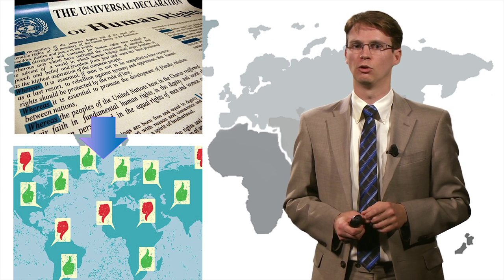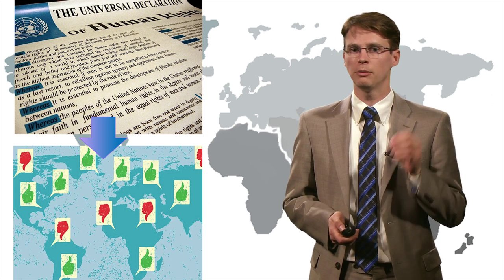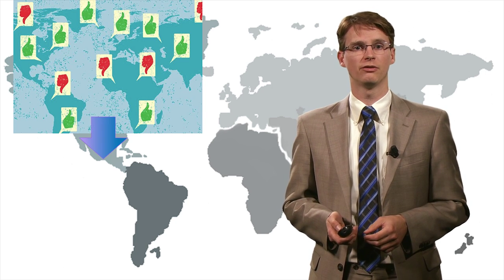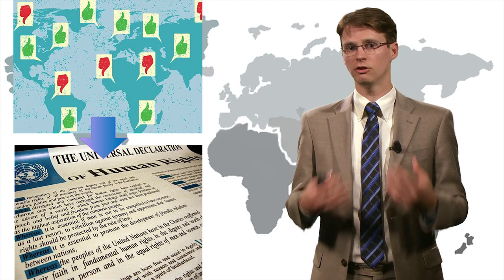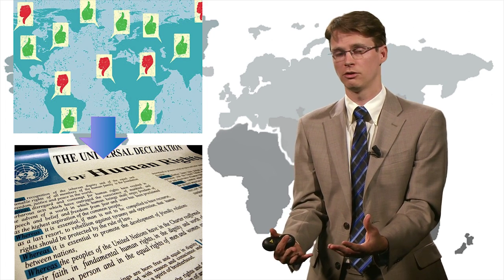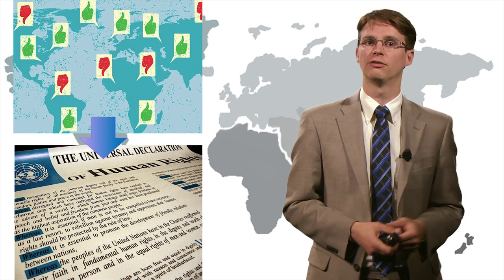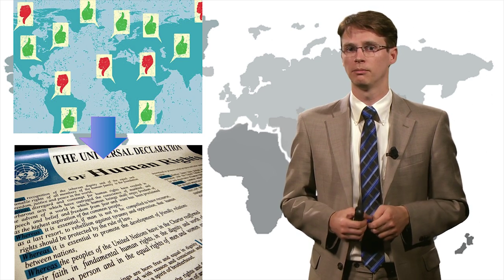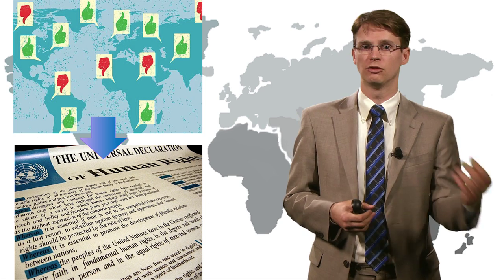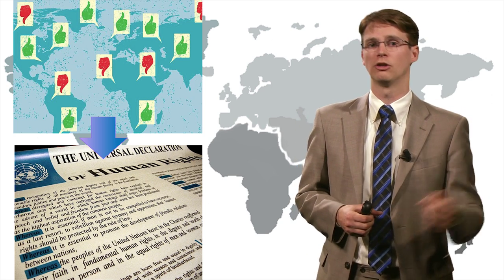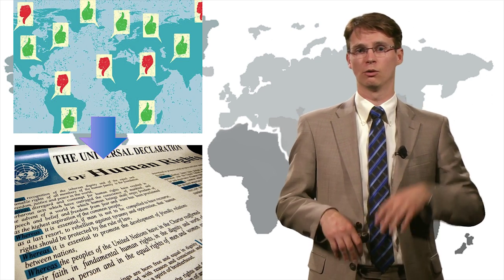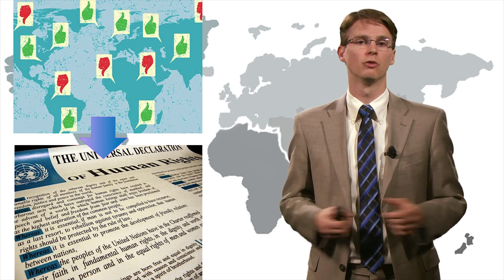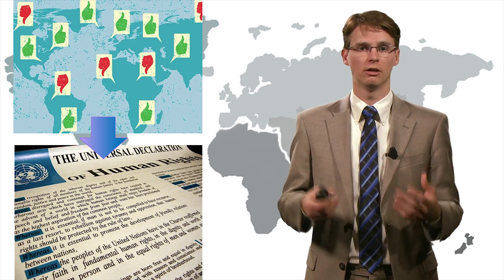But is this really the proper temporal order? It might be exactly the other way around — that human rights compliance actually has an effect on ratification. In this scenario, the country would first comply with human rights and then decide it would be wise to ratify the treaties. So if the temporal order is not clear — if we do not know what is the cause and what is the effect — then we cannot prove causality.